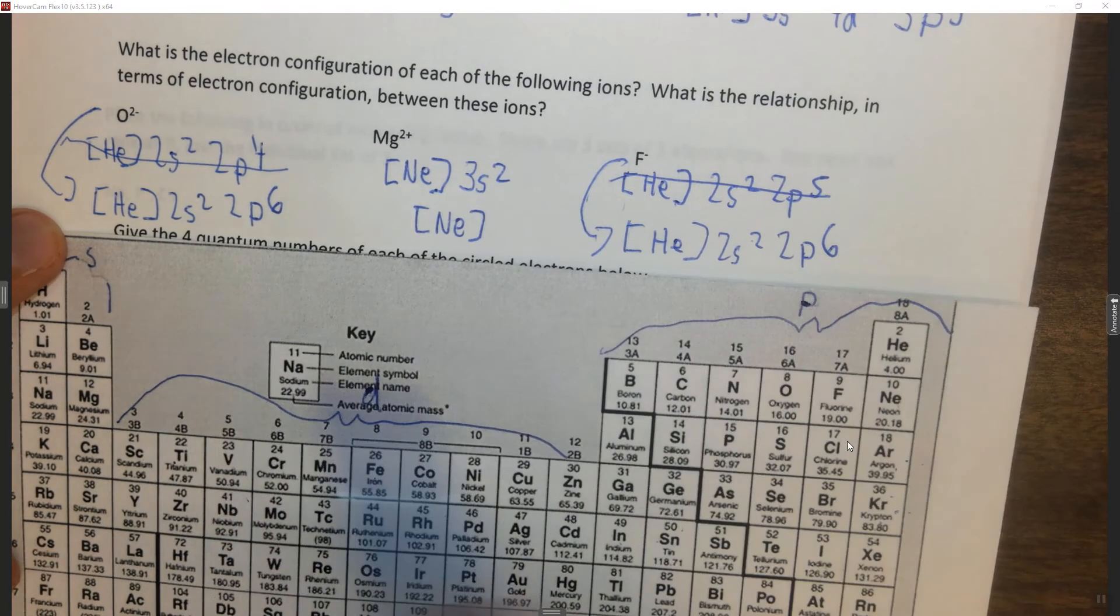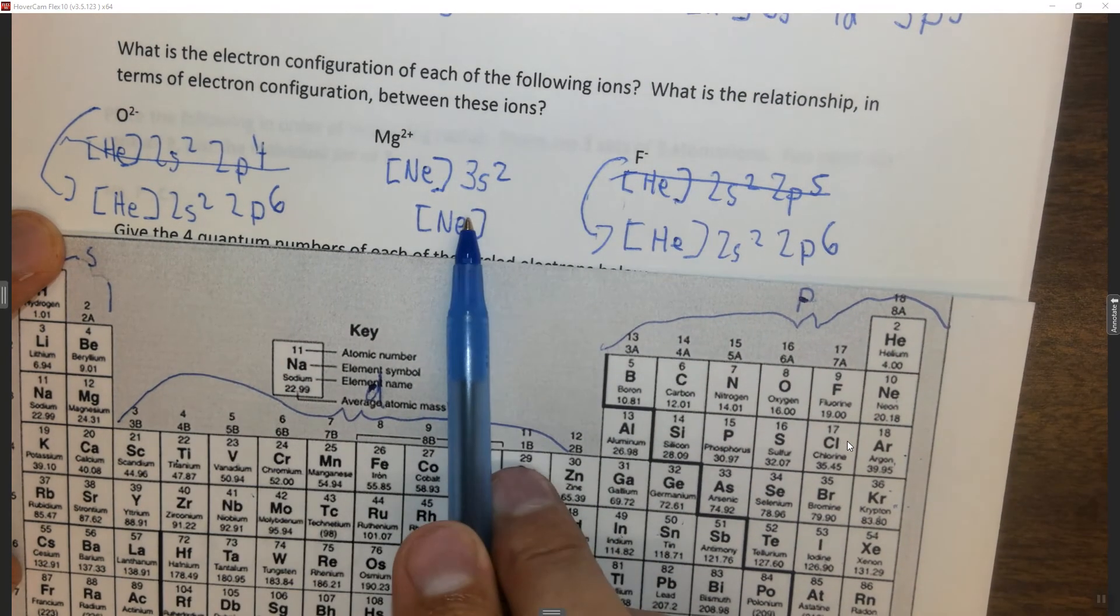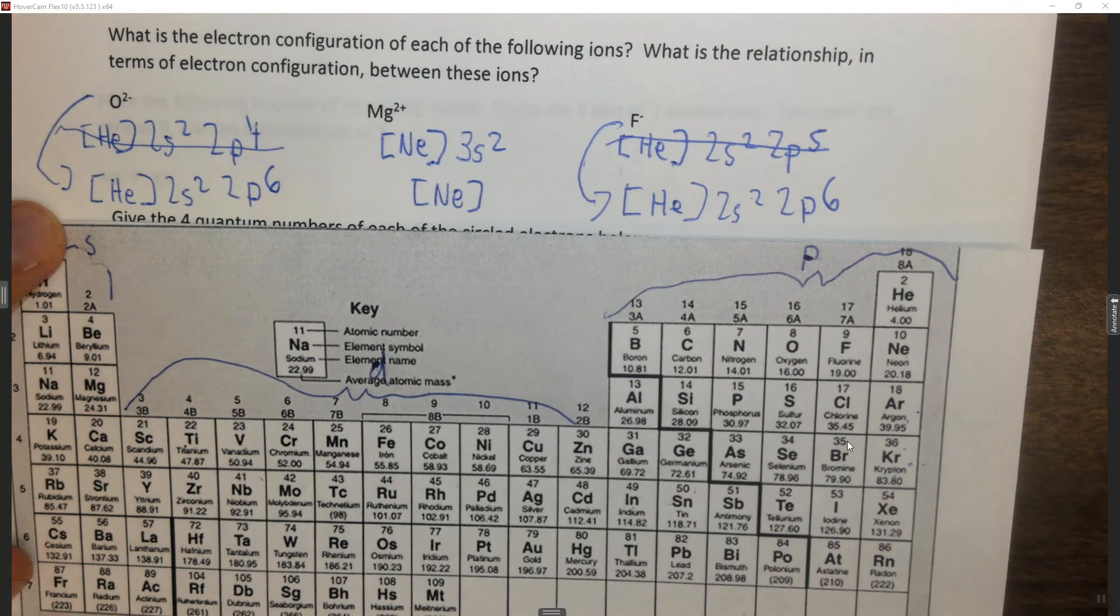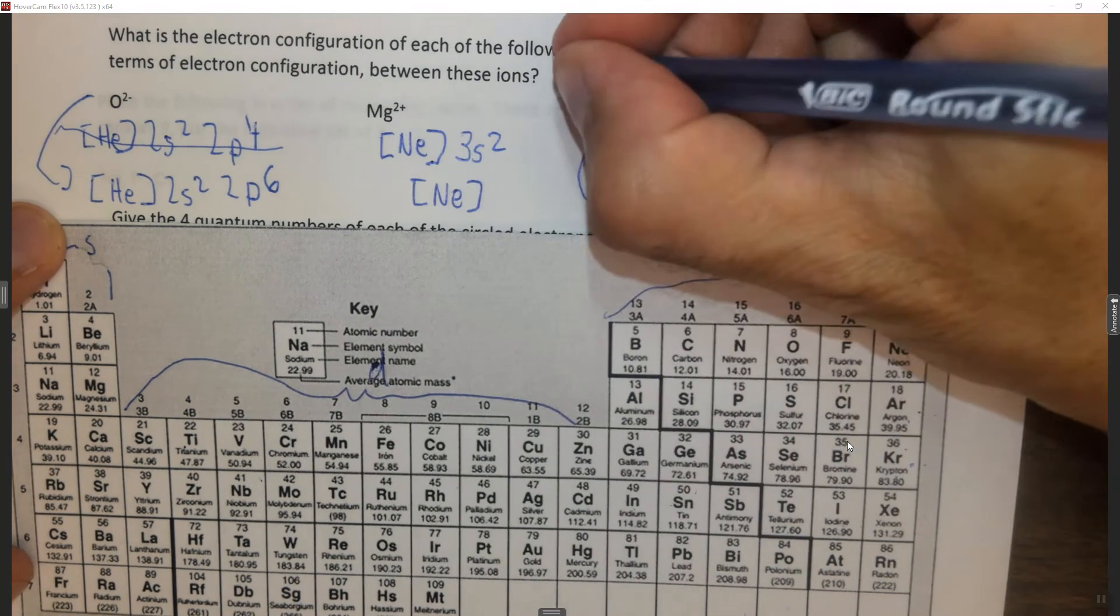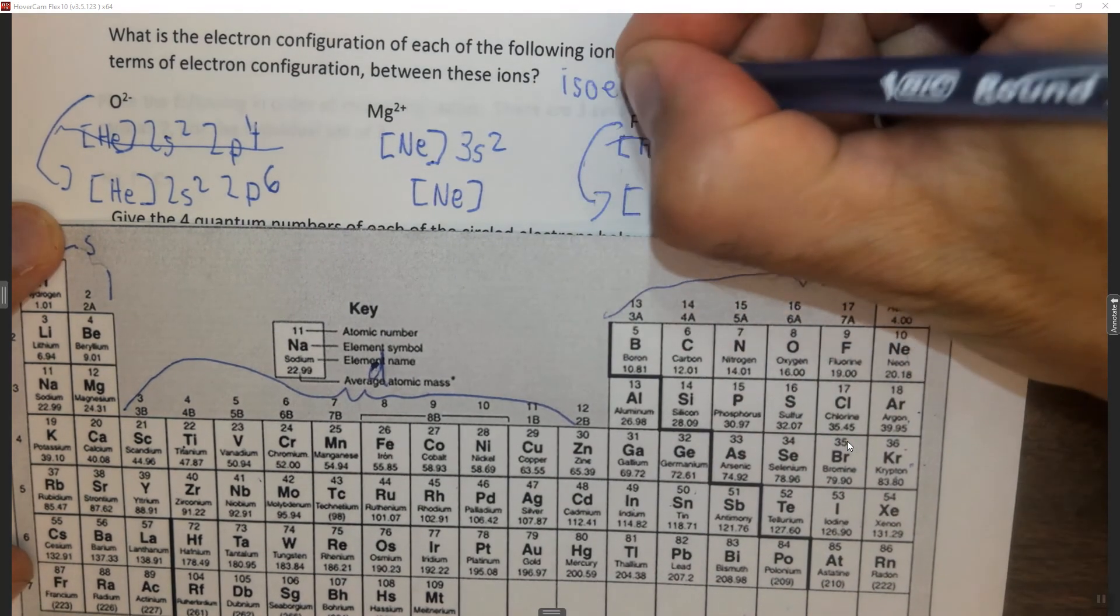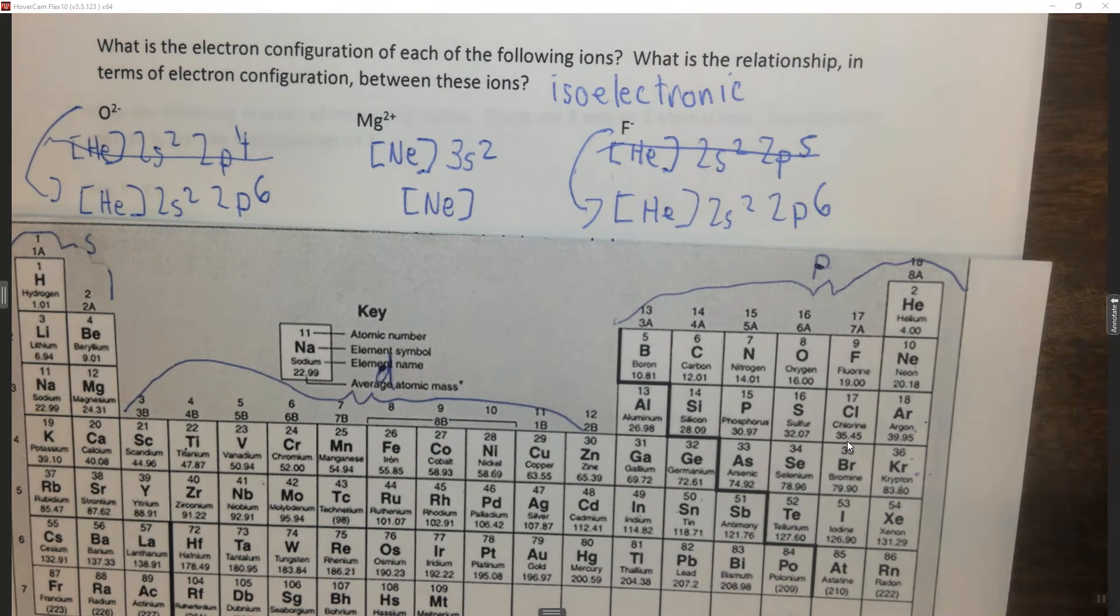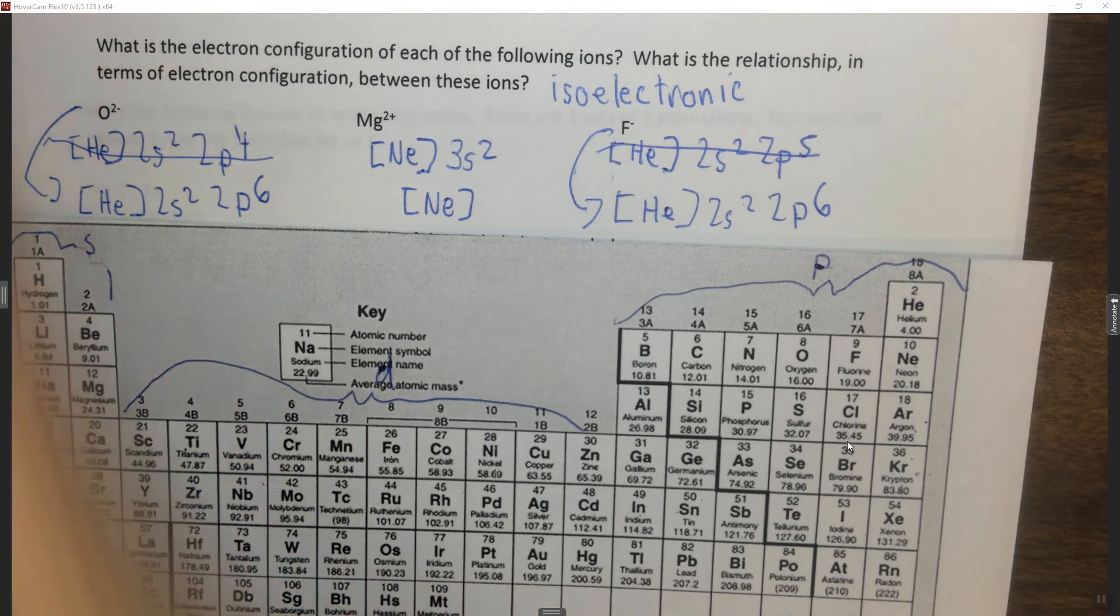Notice that this is again the same as O²⁻, and the same as neon. All of these things have the exact same electron configuration. That means they're called isoelectronic. Different ions with the same electron configuration are called isoelectronic.